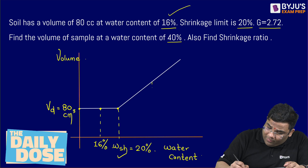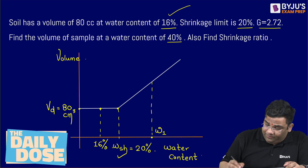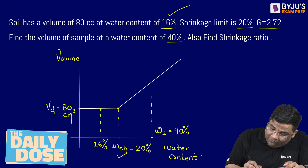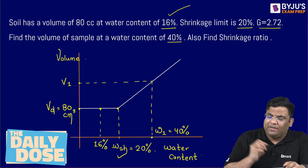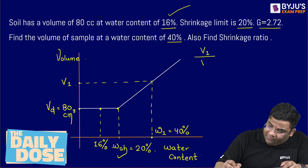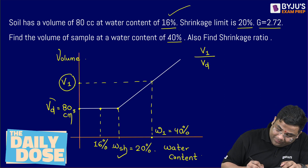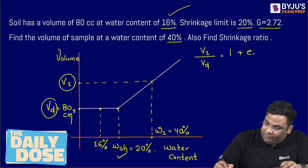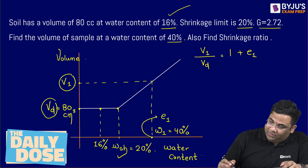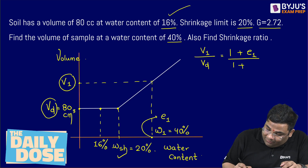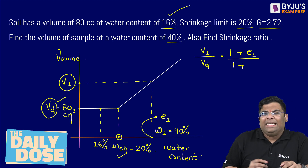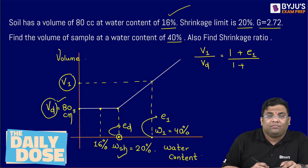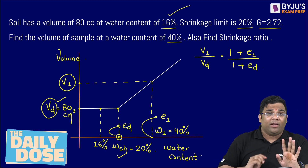We have to find out the volume at 40% water content. Let us name it V1, where W1 = 40%. To find V1, we use the formula: V1 by VD equals the ratio of 1 plus void ratio E1, divided by 1 plus ED, the dry void ratio. We also know the formula ES equals WG.